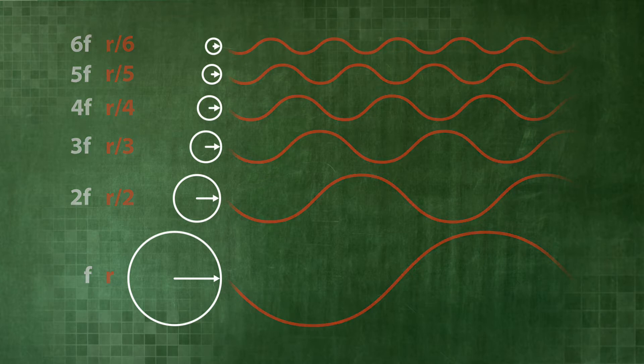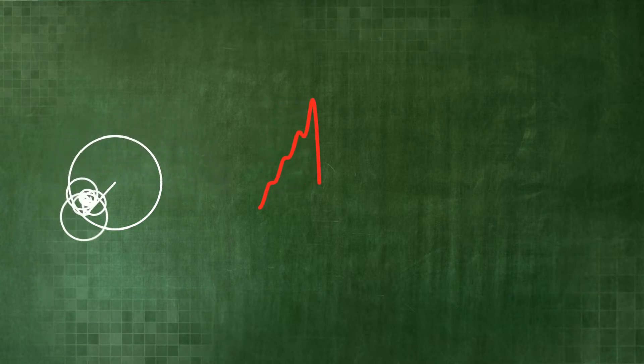What is the time course of this superposition? The spinning wheels, with their respective frequencies and amplitudes, form a kind of sawtooth wave.